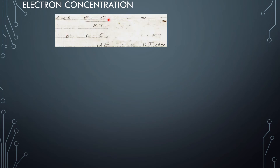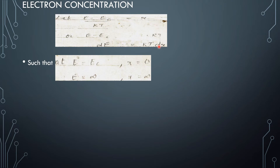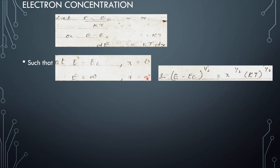We substitute (E - Ec) / KT = x, so E - Ec = x · KT. Differentiating, since Ec is a constant, dE = KT · dx. The limits change: for E = Ec, x = 0, and for E = infinity, x = infinity. Also, (E - Ec)^(1/2) = x^(1/2) · KT^(1/2).